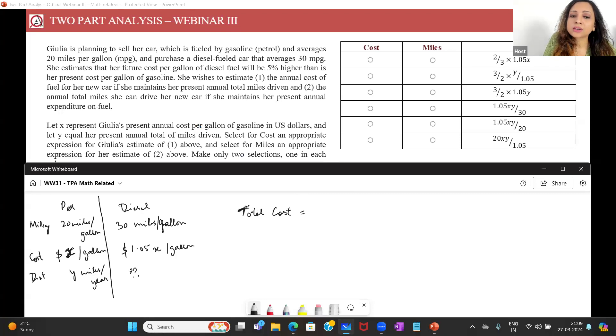We talked about how total cost can remain same. Total cost is given by quantity into price per unit of quantity. This is a relation that we understand, an economics relation. So quantity into the price gives me the total cost. Now how do I get? I know the price. I'm asked about the total cost of the diesel car. I have the price which is simply 1.05x. What about the quantity? The total quantity of the fuel used, how do I find that?